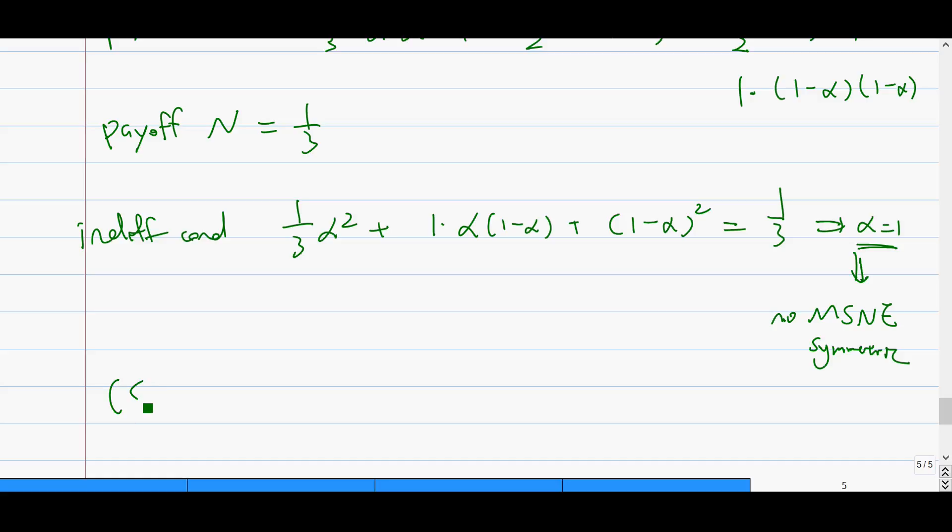Then we can find the pure strategy ones. There are only two possibilities, SSS or NNN. Given NNN, obviously everyone will want to deviate to play S. So this is not a Nash. So SSS is the only one Nash that's symmetric.